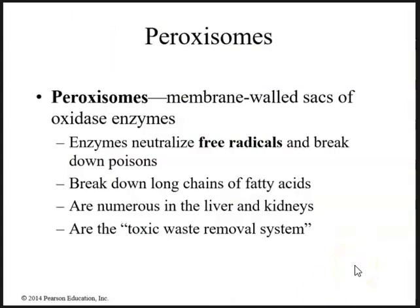Next are peroxisomes — membrane-walled sacs of oxidase enzymes. Peroxisomes help neutralize free radicals, help break down poisons, and can break down long chains of fatty acids. They are very numerous in the liver and kidneys because they help detoxify things. Peroxisomes are the toxic waste removal system of the cell.